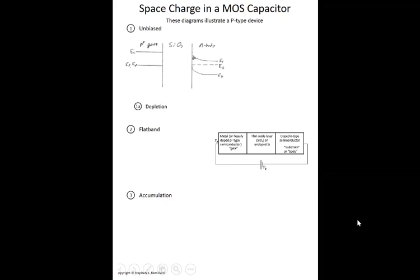Before we begin doing quantitative calculations on the bias conditions for a MOS capacitor, we should stop and talk a little bit about the distribution of space charge that can happen under the various bias conditions.